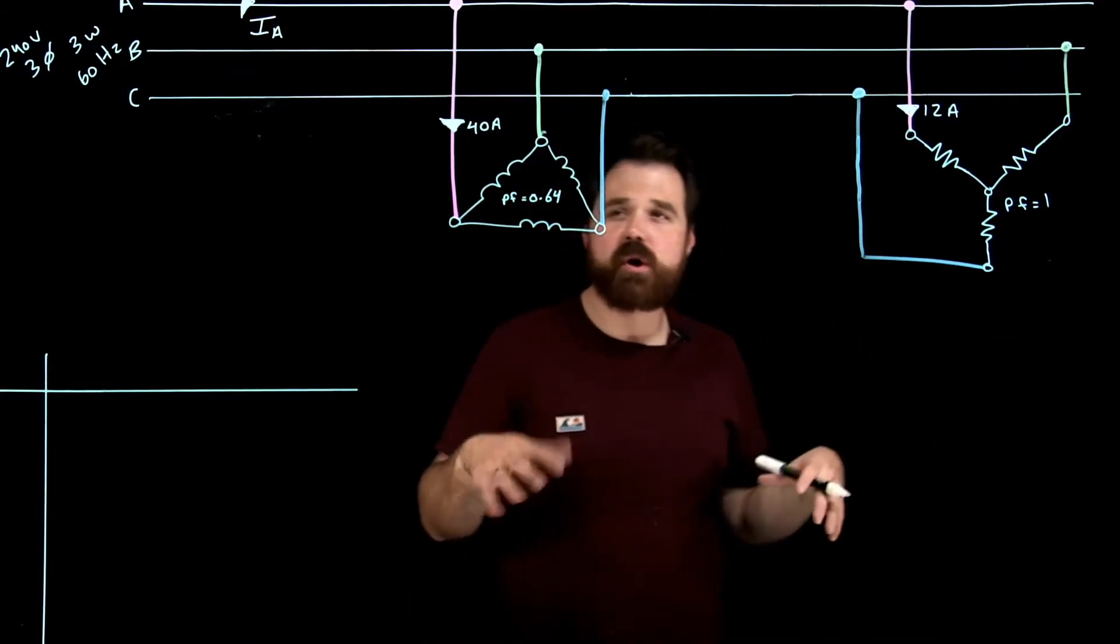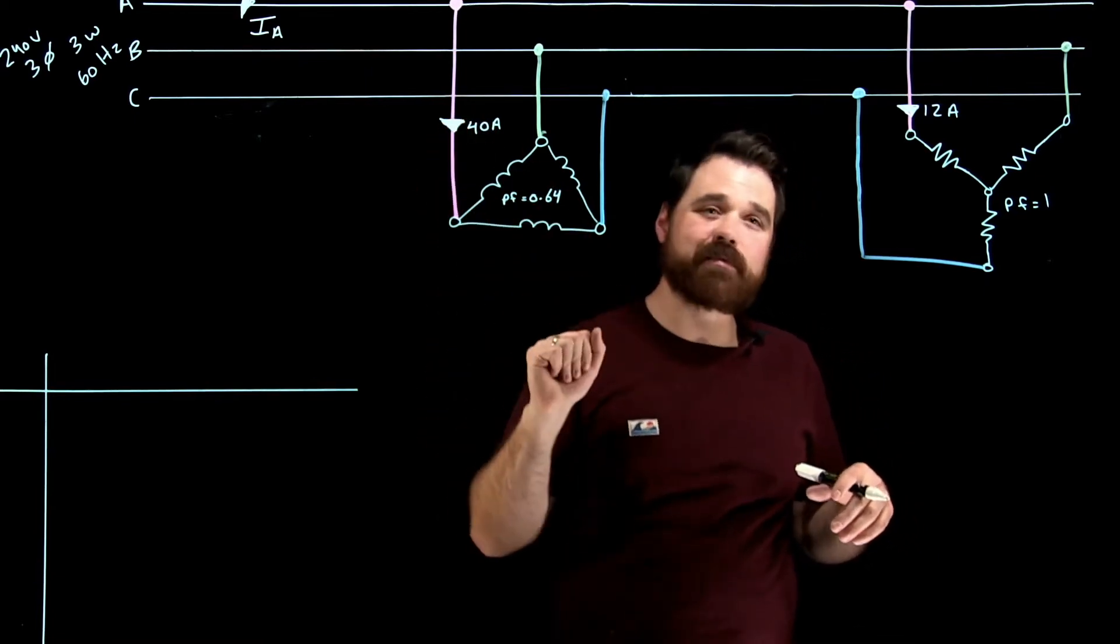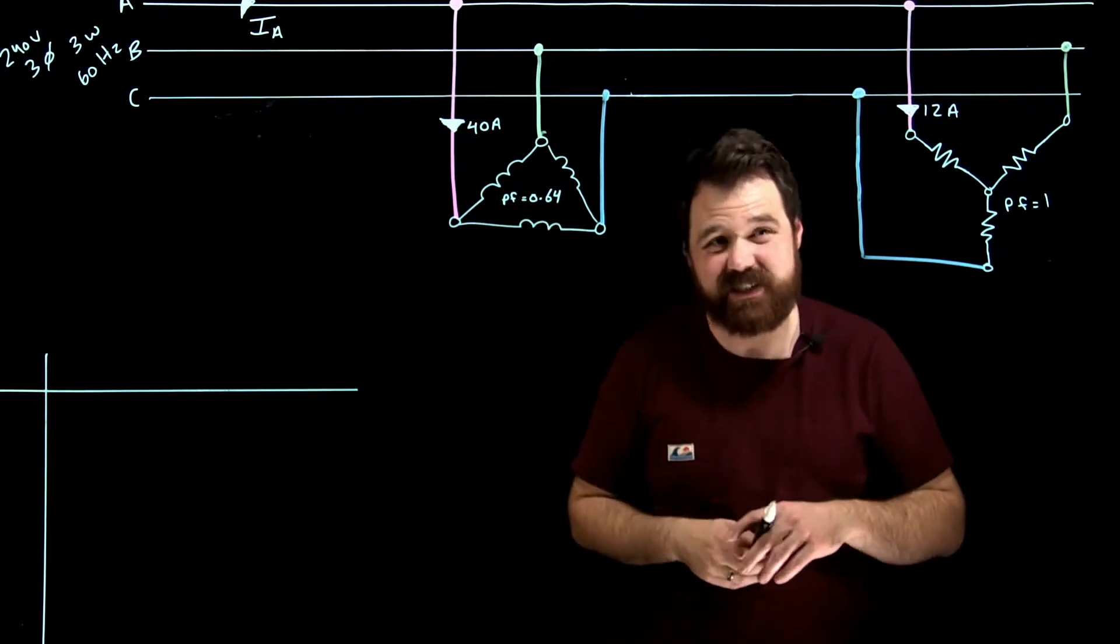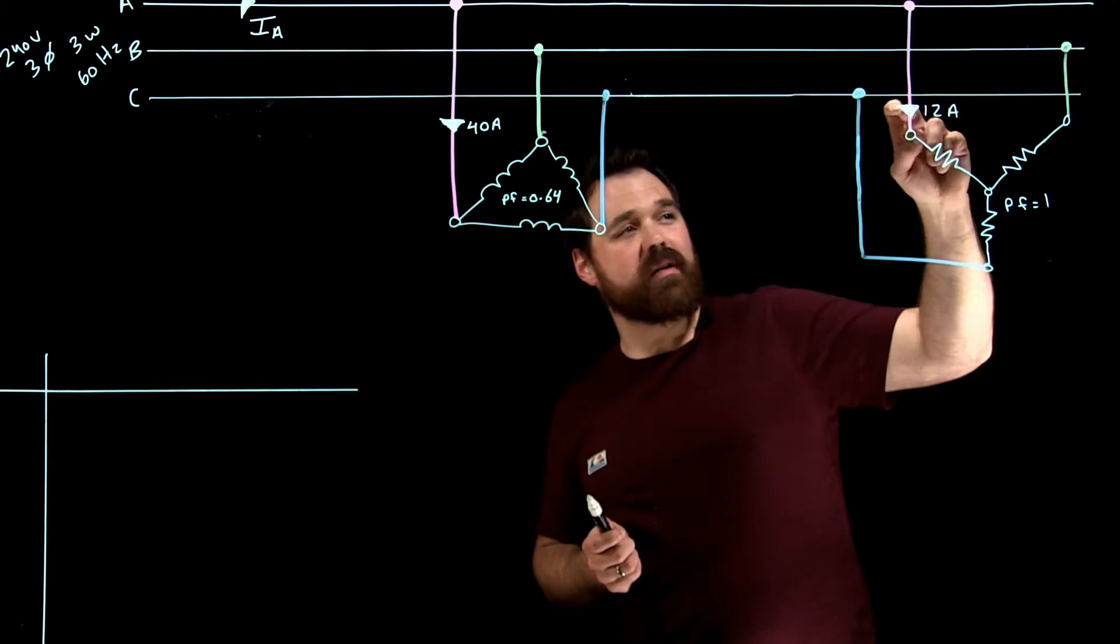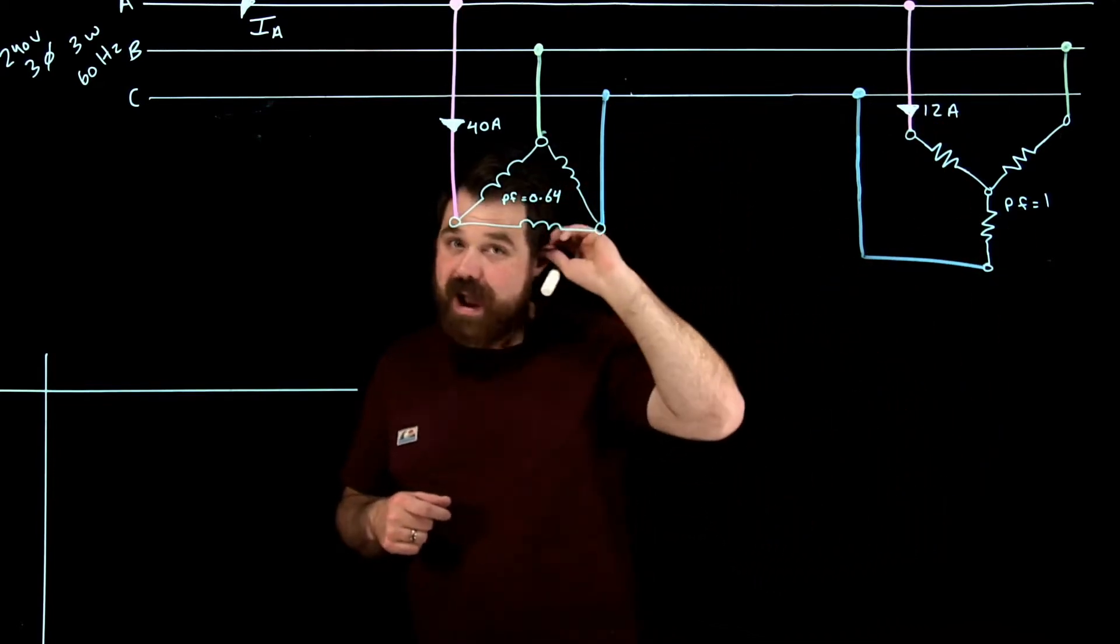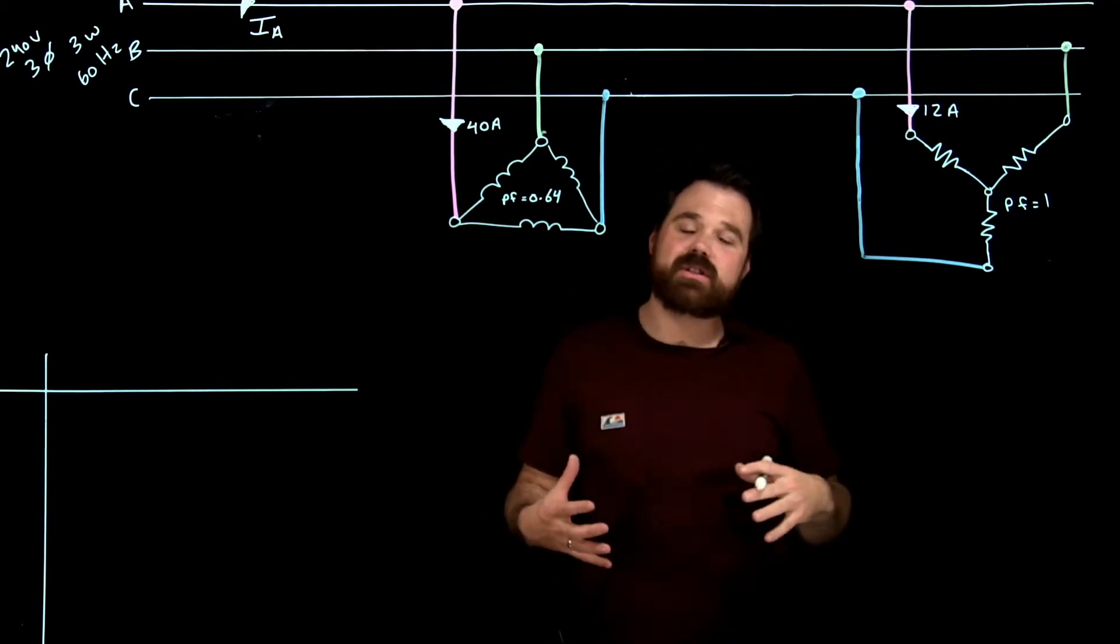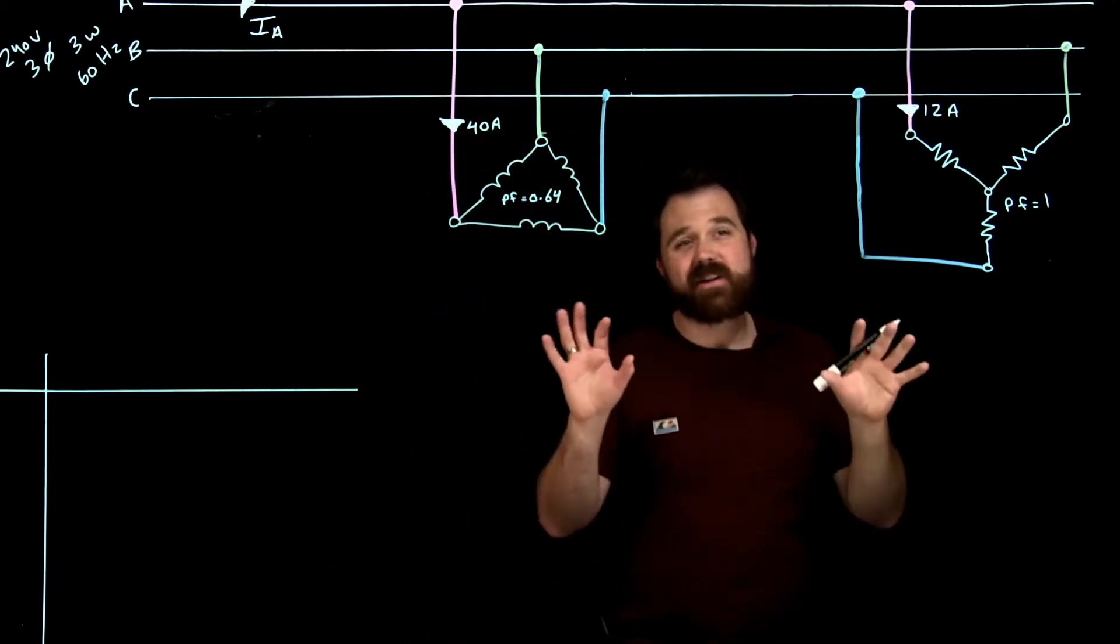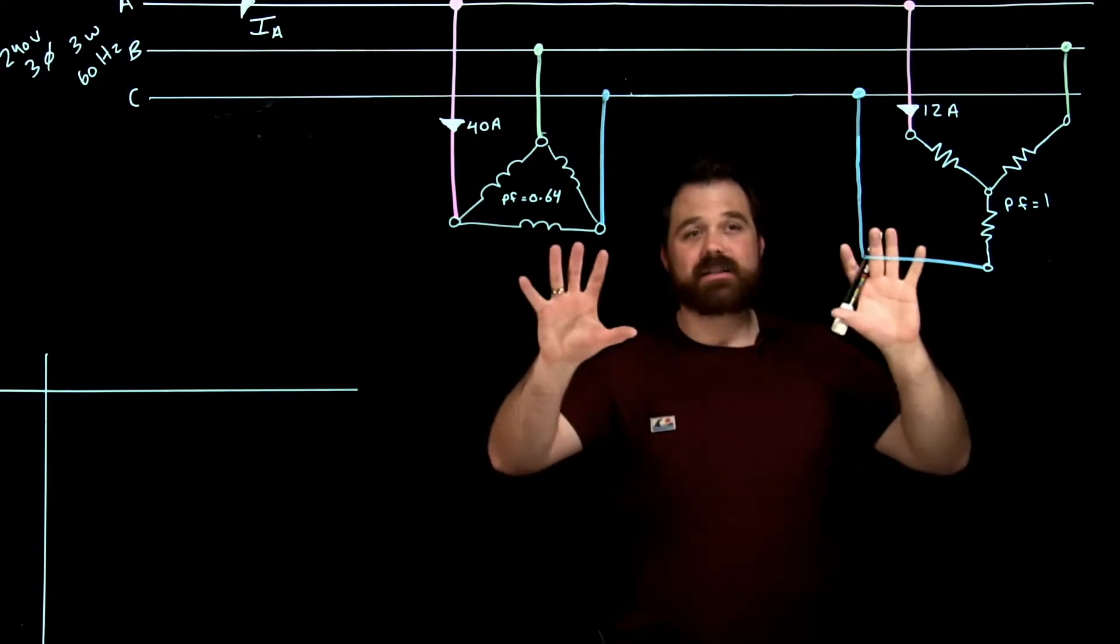So here I have two loads. Load one is a delta load, 40 amps is my line current, and it's got a power factor or phase angle power factor 0.64. Now over here, we have 12 amps line current and a power factor of one. The biggest thing when you're doing these calculations is remembering your rules. Here we're dealing with two balanced loads.